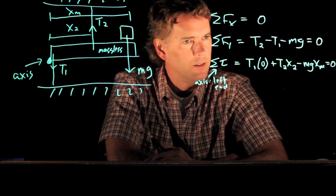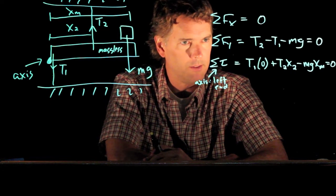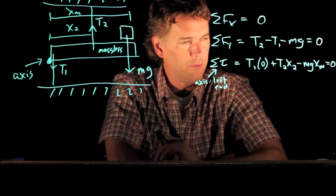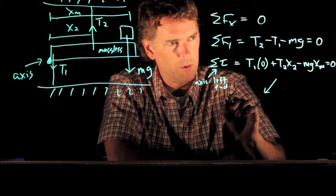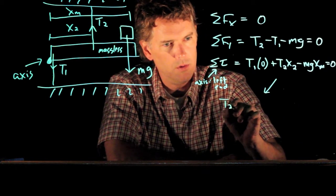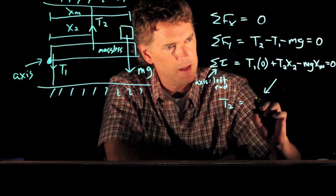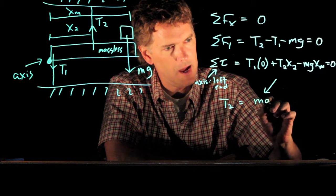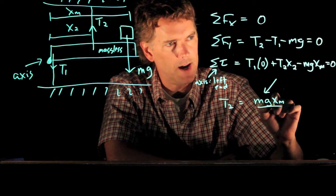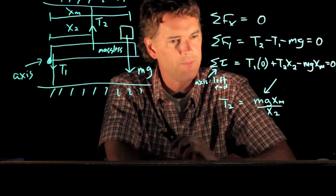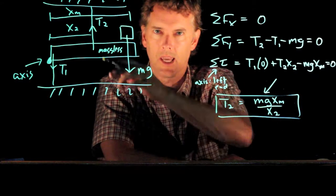Okay. We have two equations now. And we have two unknowns. And so we can solve for these. So if we solve the second equation for T2, what do we get? We get T2 equals, first term goes away, last term I move over to the other side, it becomes positive mg x sub m. And then I have to divide by x sub 2. So that is the tension in cable 2.